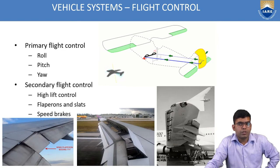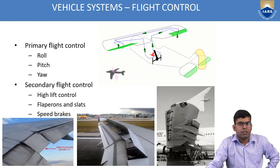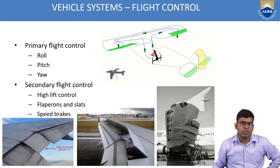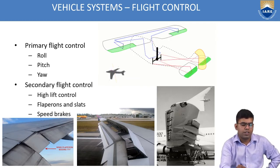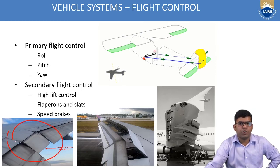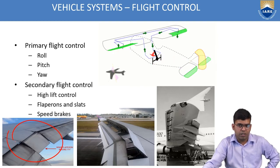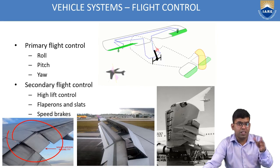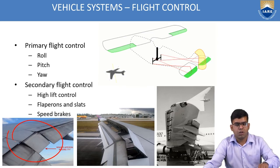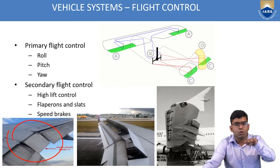We also have secondary flight controls, which include high lift controls, flaparons, slats, and speed brakes. On the bottom left corner you can see flaparons on the Boeing 777. A flaparon is a control surface that functions as a flap but also has the same control authority as an aileron — so it is a flap used to control the roll moment of an aircraft.